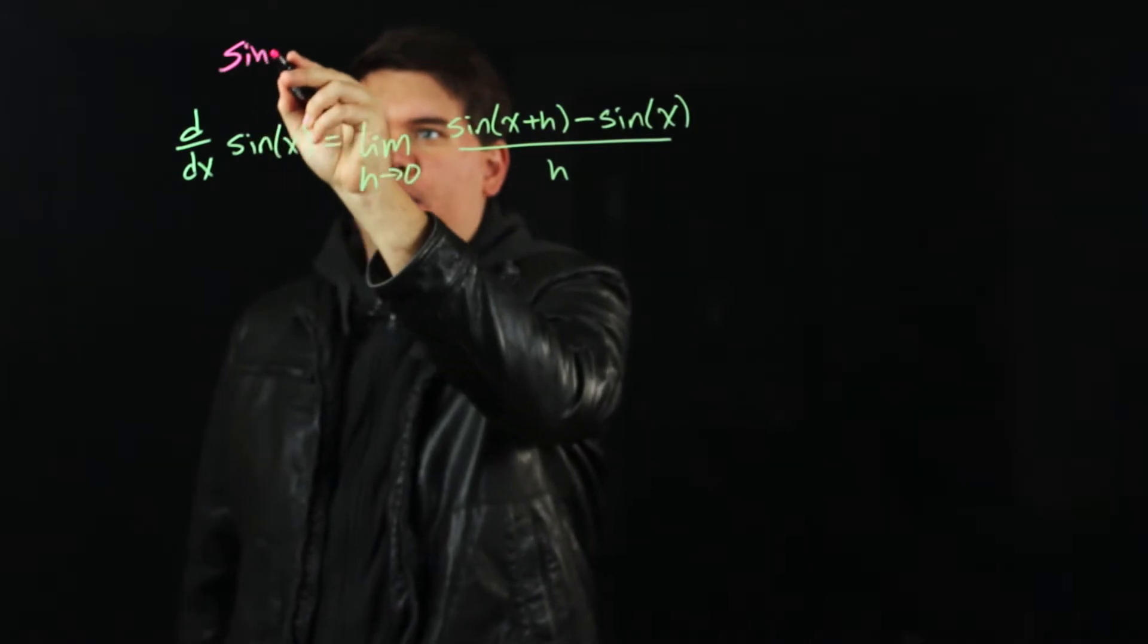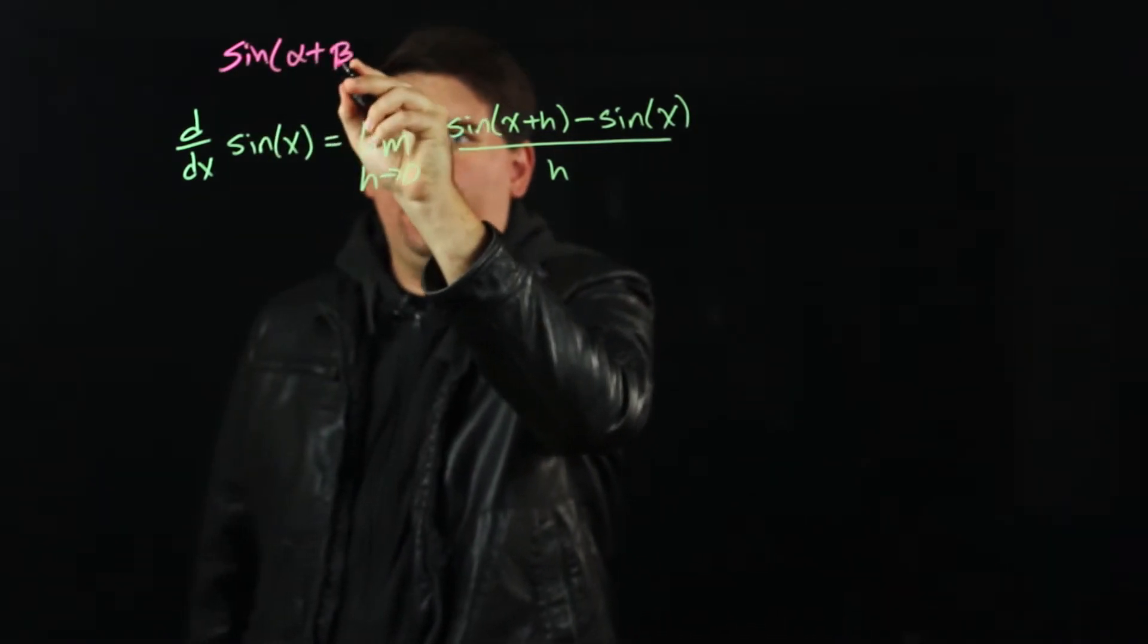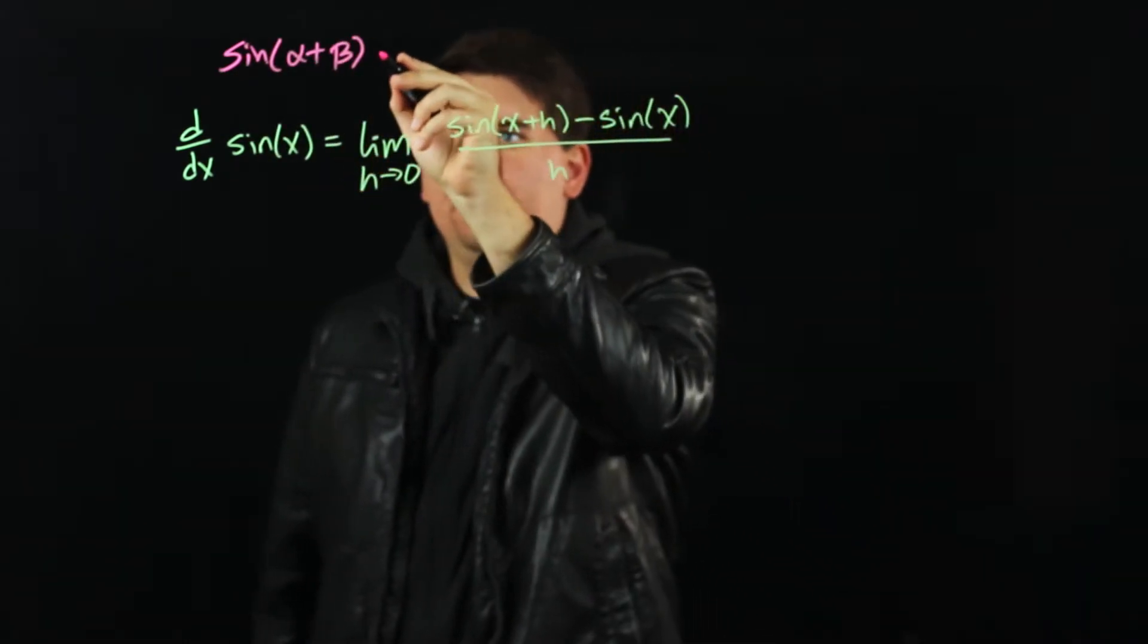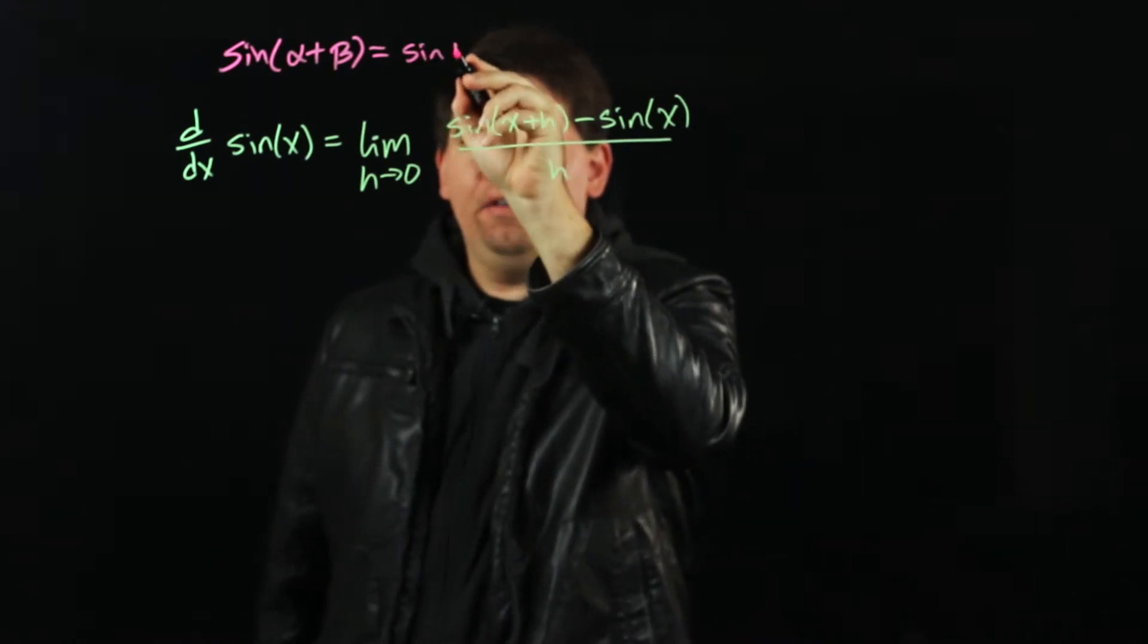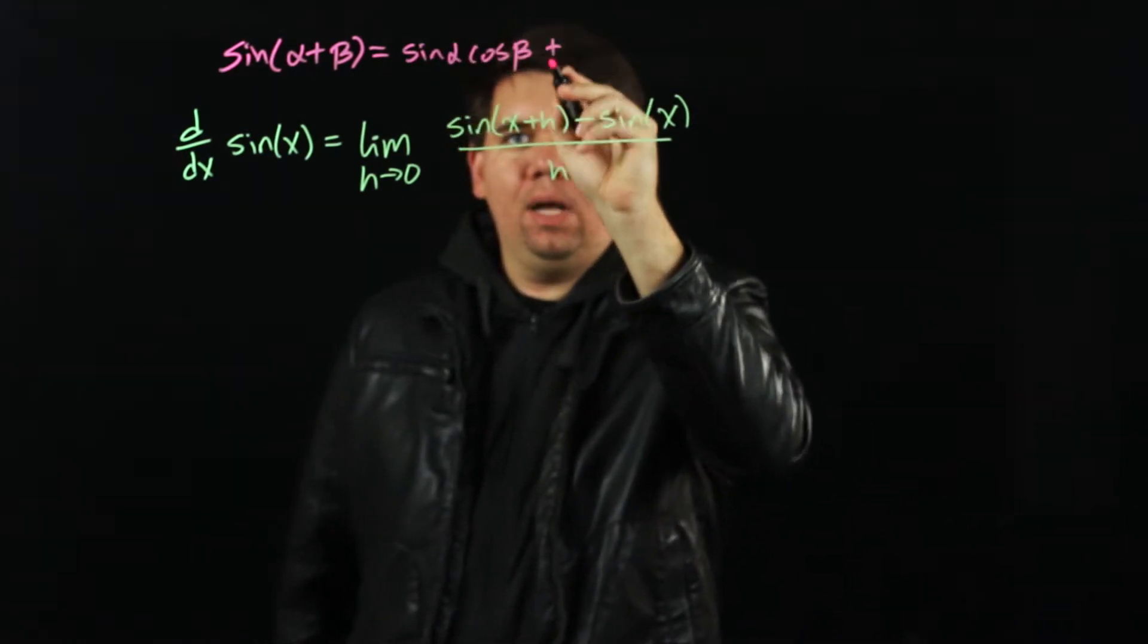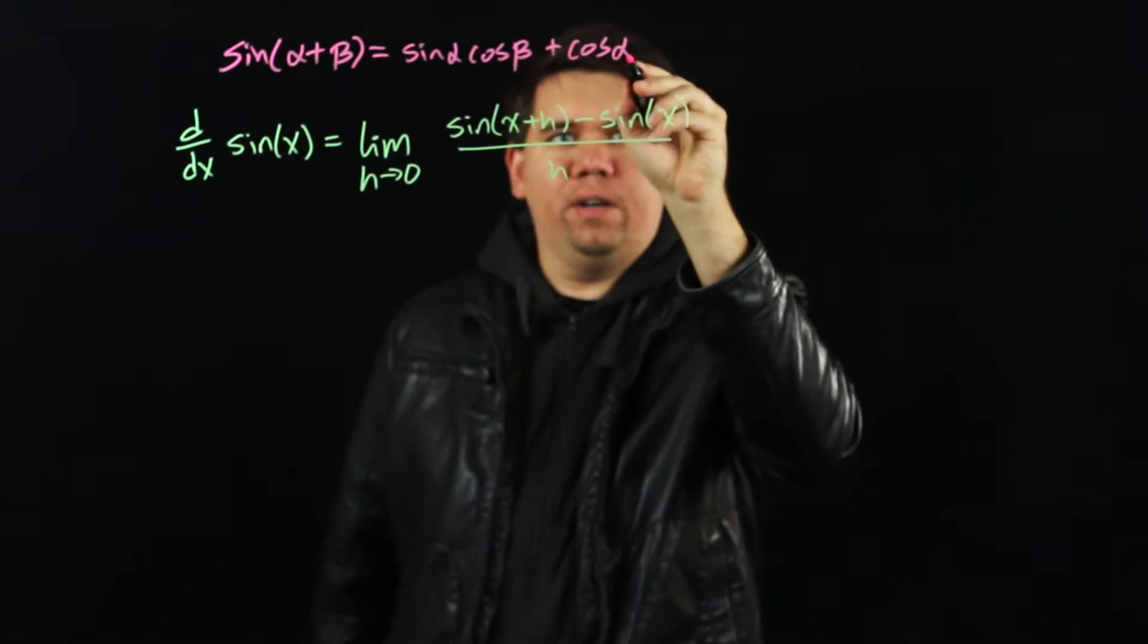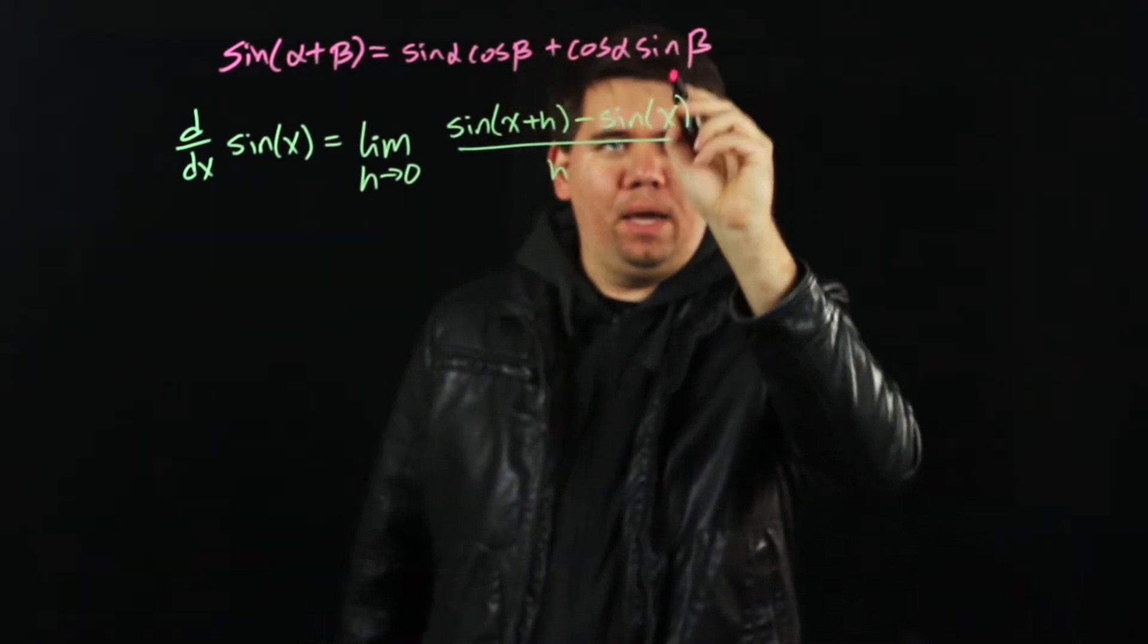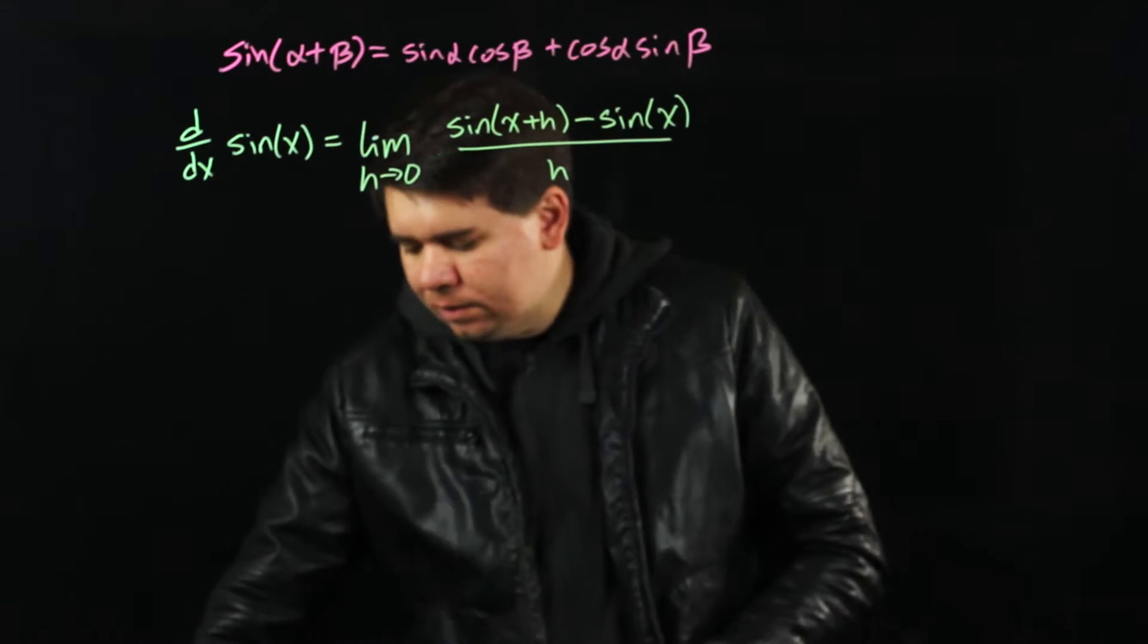When you have sine of alpha plus beta, that just comes out to be sine of alpha times cosine of beta plus cosine of alpha times sine of beta.